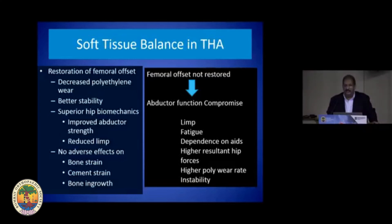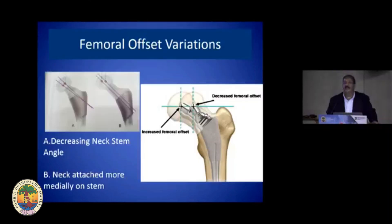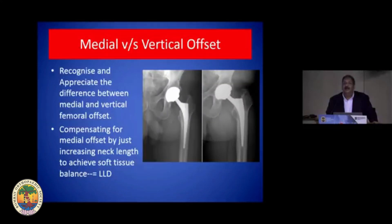Inadequate offset also results in higher resultant hip forces, higher poly wear, and an increased risk of instability. There are options to increase offset — if you only use a longer neck length, you increase the offset but also make the patient longer in limb length, which is not ideal. Better options include decreasing the neck-shaft angle or increasing neck length while also placing the stem slightly more medially. It is very important not to correct medial offset by simply increasing vertical offset.